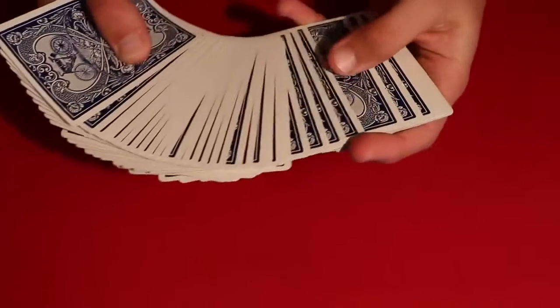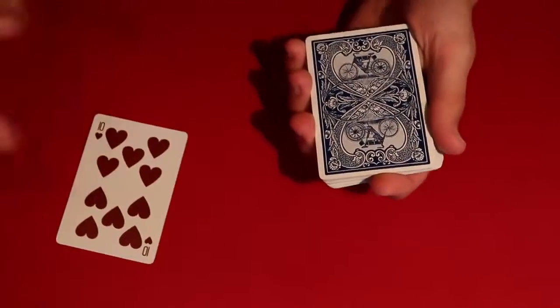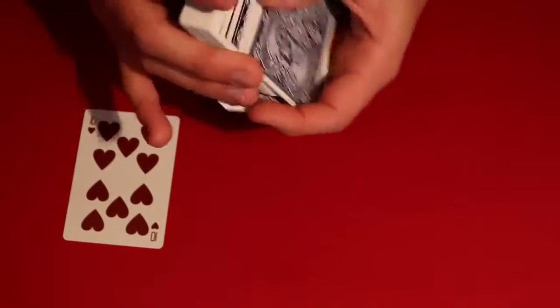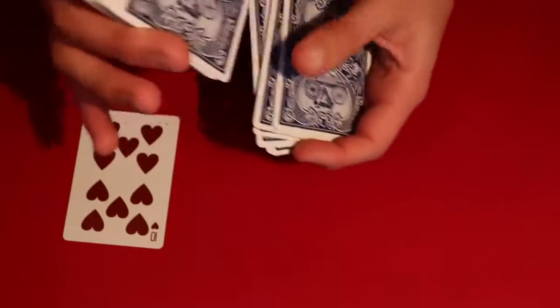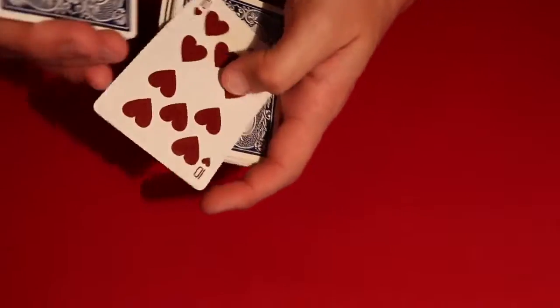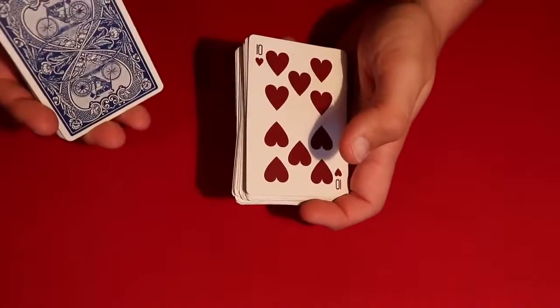So you go ahead and you have the spectator pick any card that they want to. And let's say in this case it's a ten of hearts, right? So you go ahead and what you do is tell your spectator to tell you when to stop. And all you're doing is a regular overhand shuffle and the moment they tell you to stop, I'll leave the card right here. You're doing a, all you just control this card to the top, right?